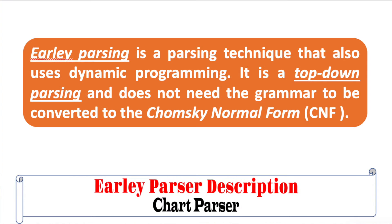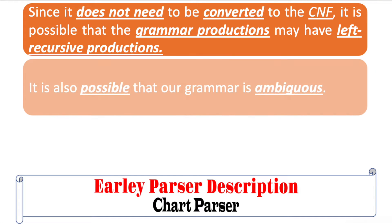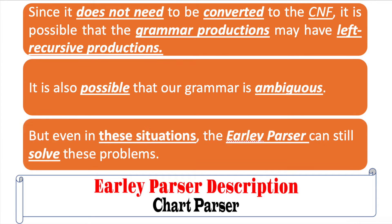Earley parsing is a parsing technique that also uses dynamic programming. It is a top-down parsing and does not need the grammar to be converted into the Chomsky Normal Form or CNF. Since it does not need to be converted into CNF, it is possible that the grammar productions may have left recursive productions. It is also possible that our grammar is ambiguous, but even in these situations, the Earley parser can still solve these problems.